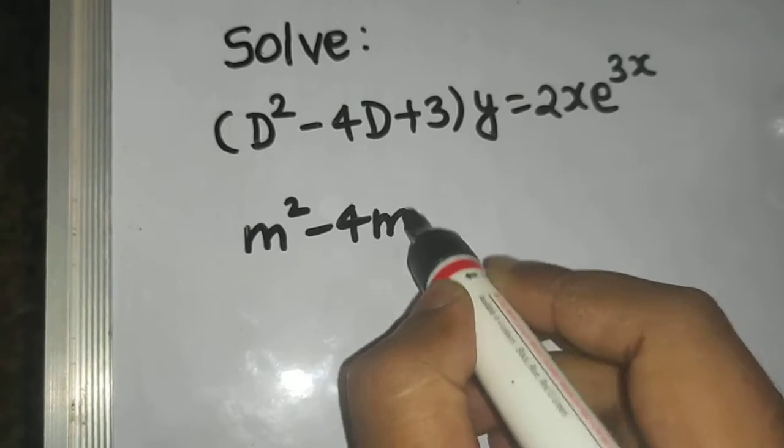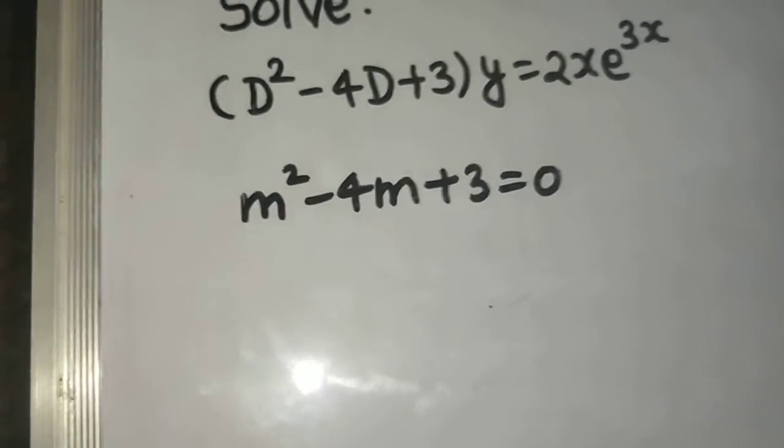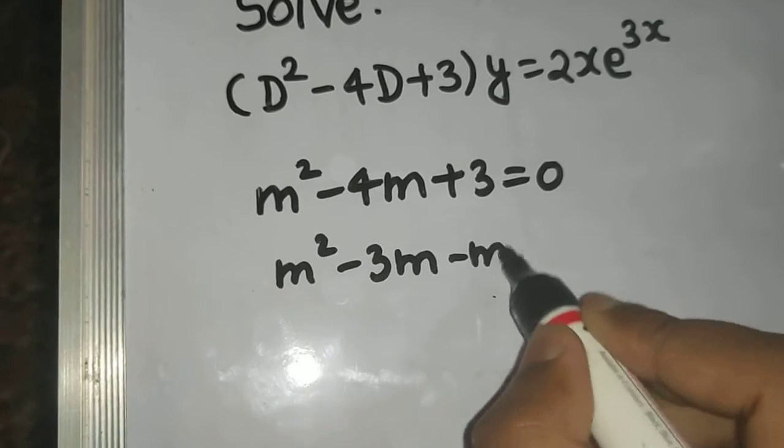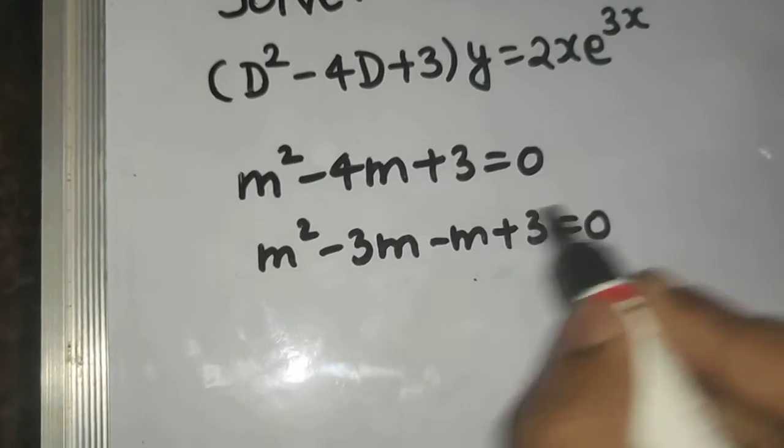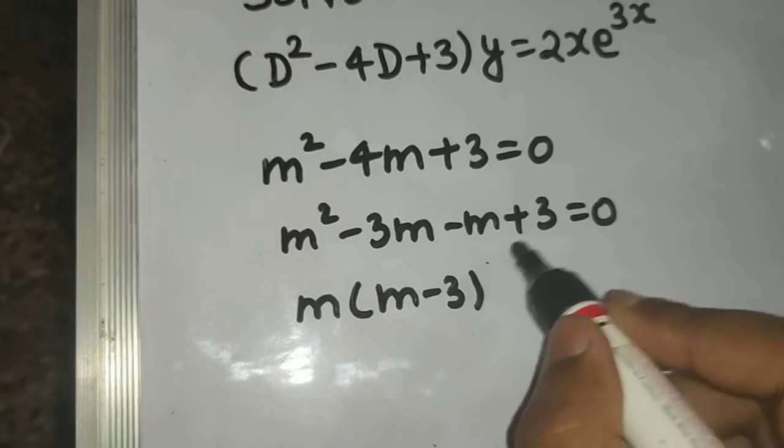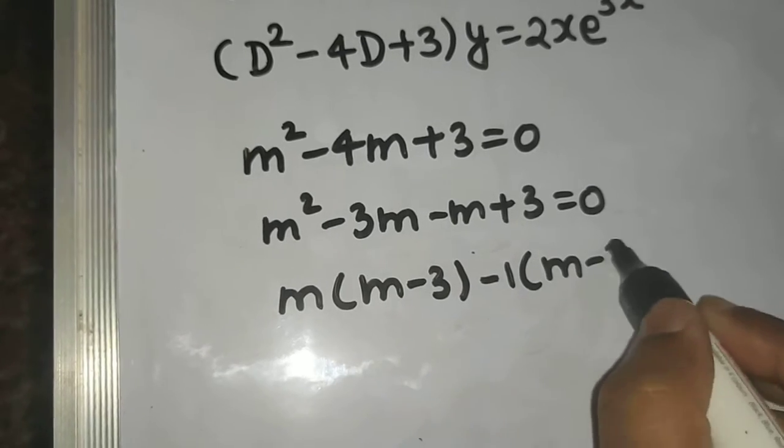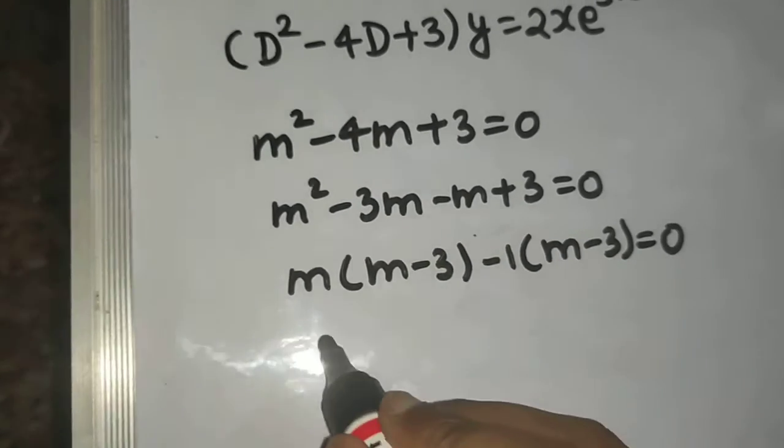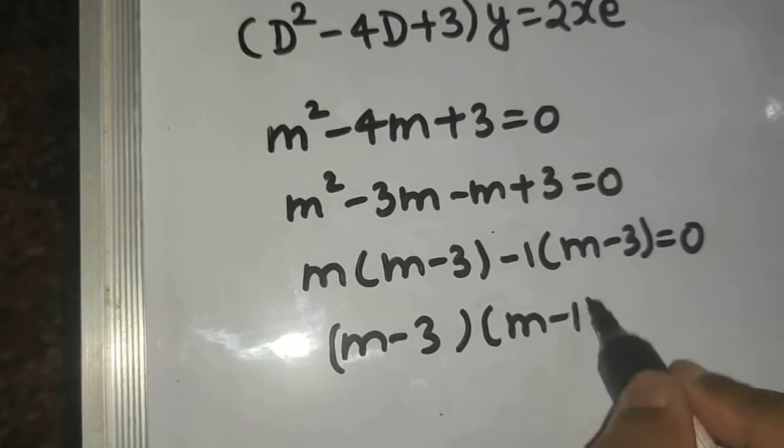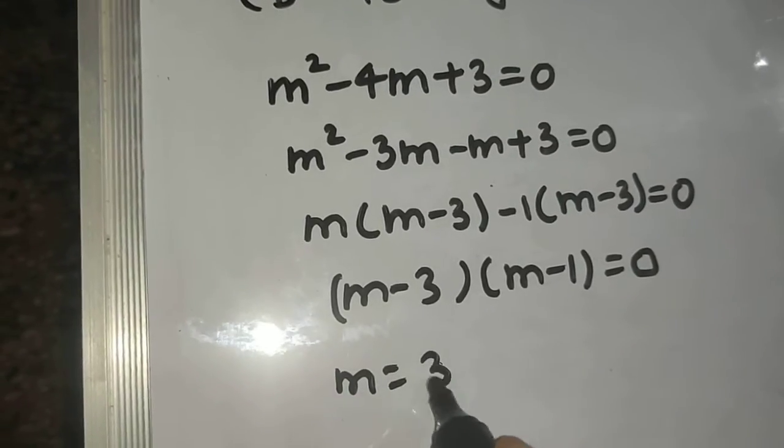m square minus 4m plus 3 equals 0. So m square minus 3m minus m plus 3 equals 0. Taking m common, m minus 3, and if you take minus 1 common, m minus 3 equals 0. So m minus 3 and m minus 1 equals 0.